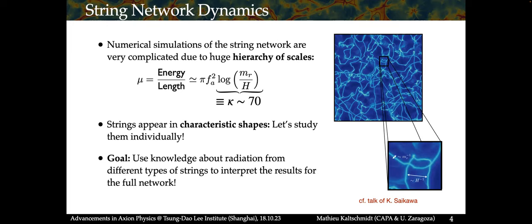The main problem for our numerical simulations of the string network is that we have a huge hierarchy of scales. This is mainly due to the fact that we have a huge separation in scales between the intrinsic length scale of the string cores, related to the radial mass MR, and the Hubble scale, which describes roughly the separation between the different strings. The strings appear in very funny and characteristic shapes. The idea of why we study these string loops first is that we might get some information about the radiation of different types of strings, which will help us interpret the results of the full network.